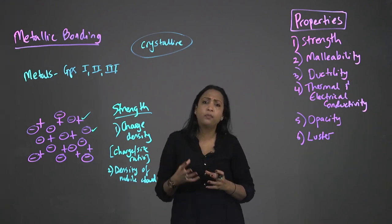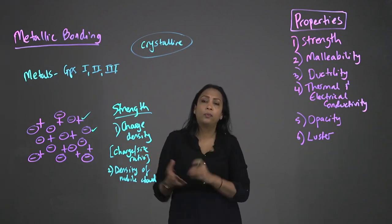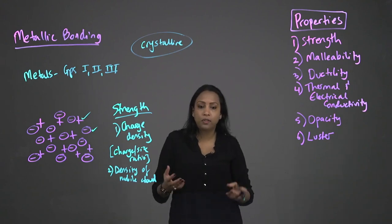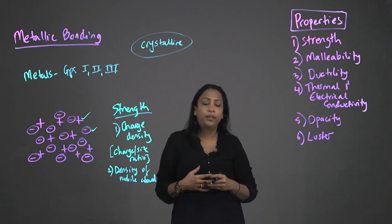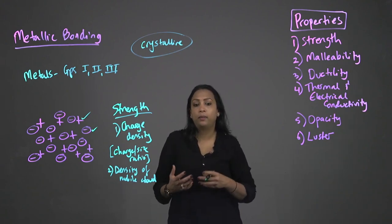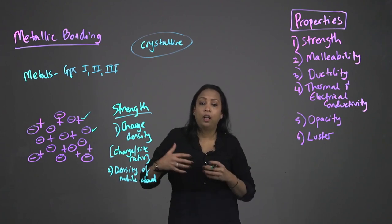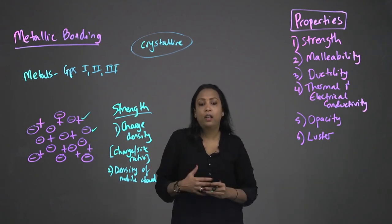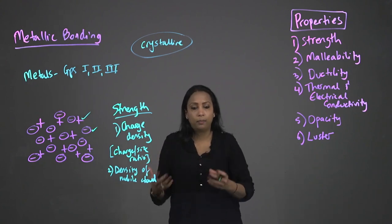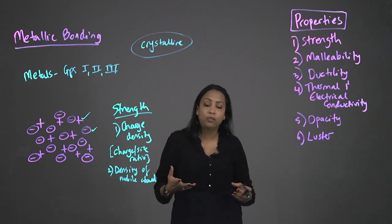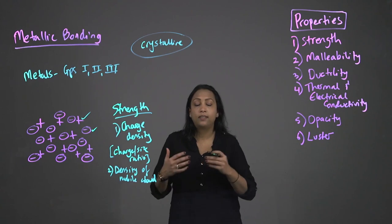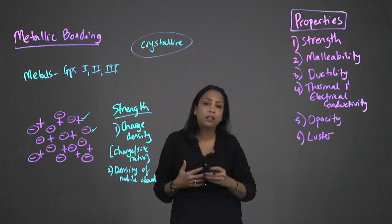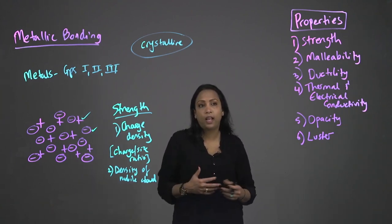Just as with ionic bonding, metallic bonding will not be observed within the biomolecules that make up living systems. Living systems are not made up of metals — they are made up of carbon-based organic compounds. However, it is very important to note that many metal ions are vital for life.